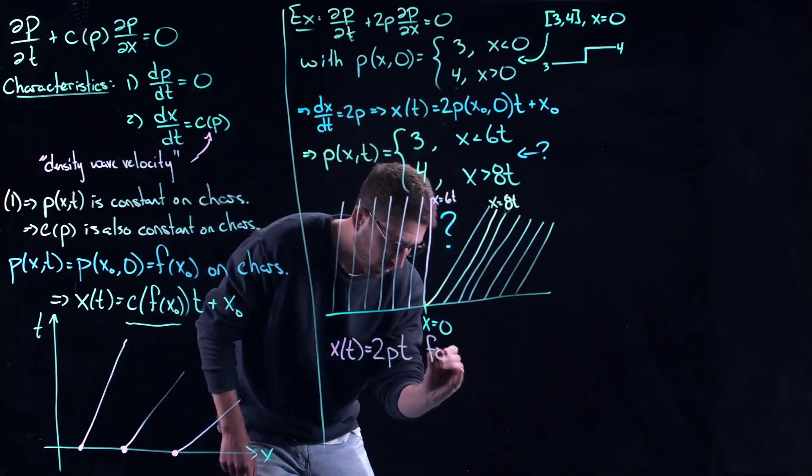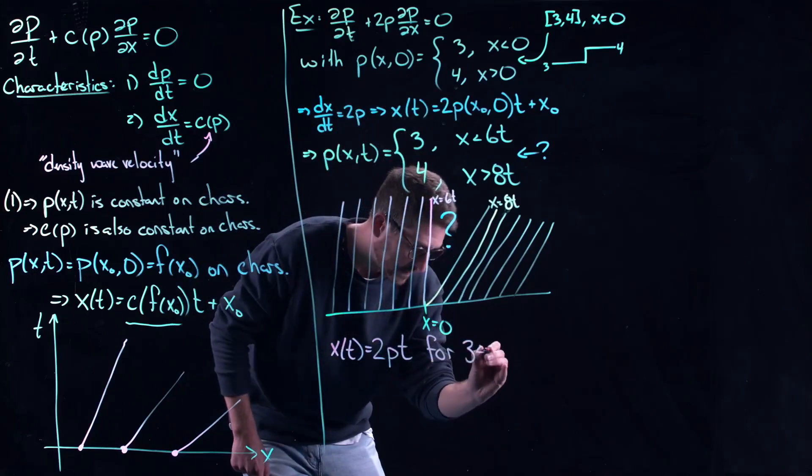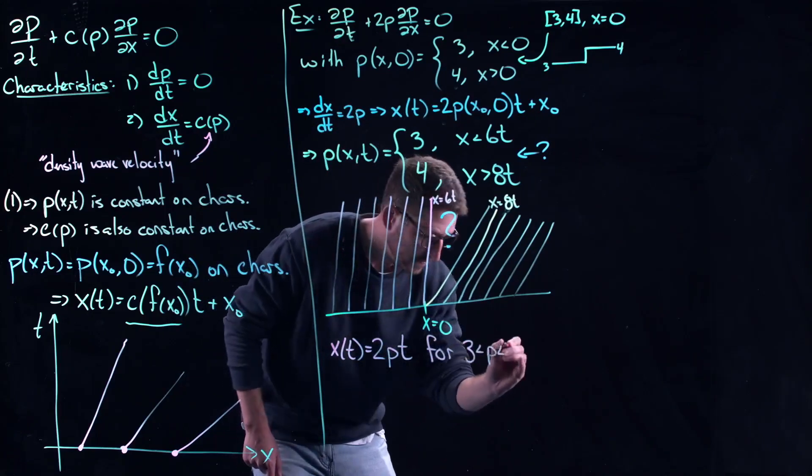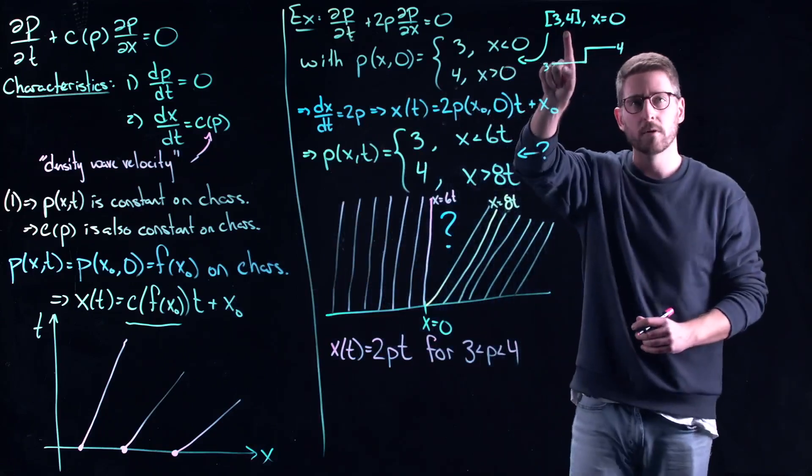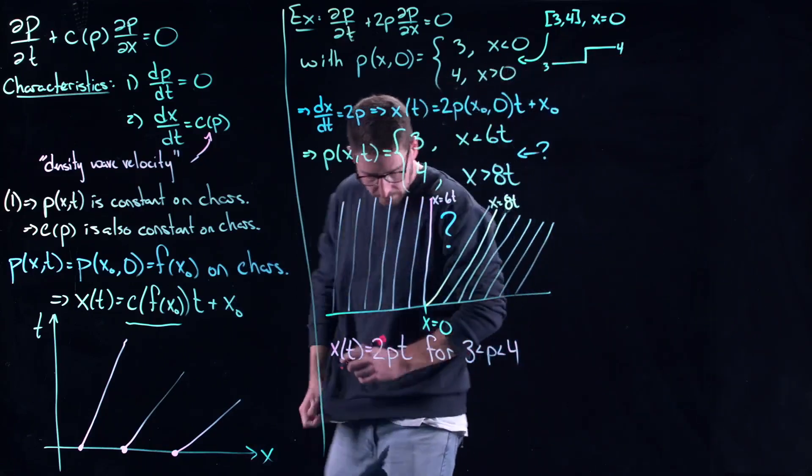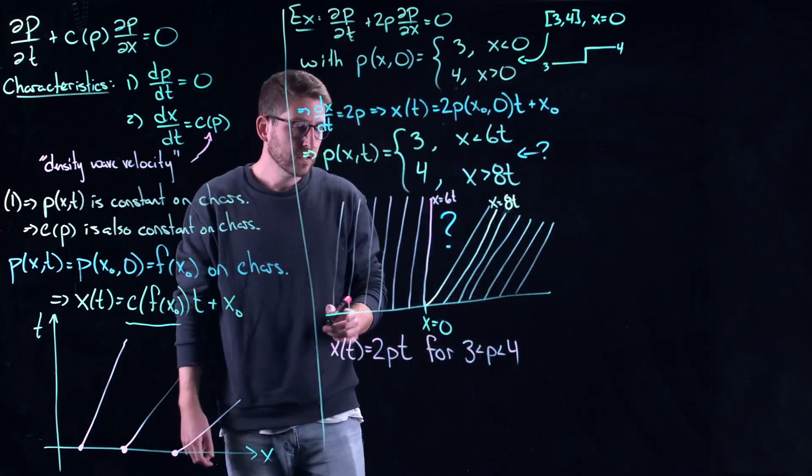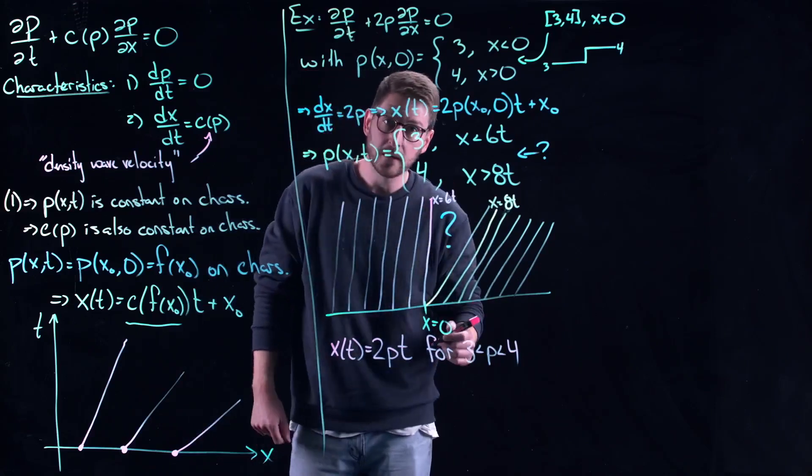You get x is equal to 2ρt at x equal to 0, for 3 less than ρ less than 4. That is the interval here. You can make it open or close, it won't matter. But essentially what that does is that fills in the fan-like characteristics.